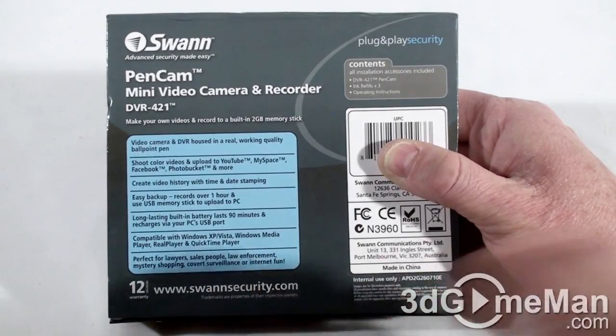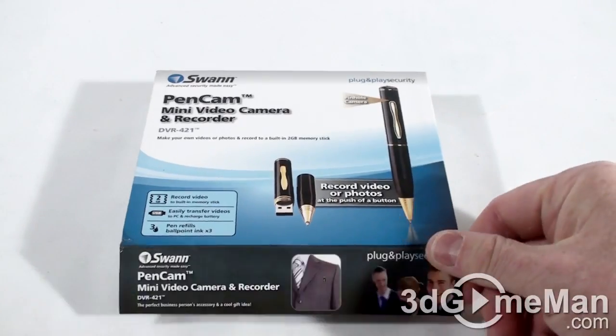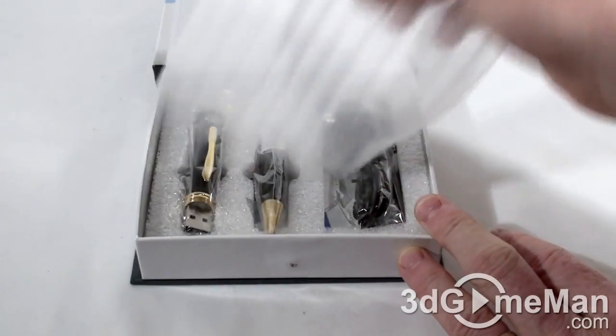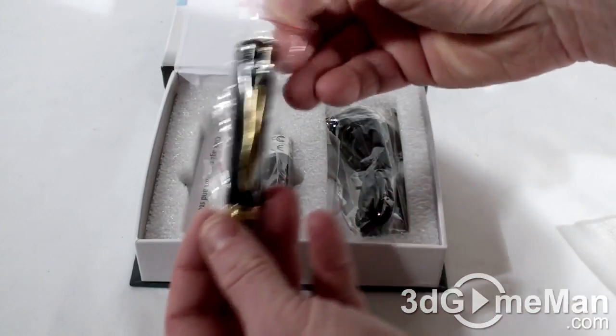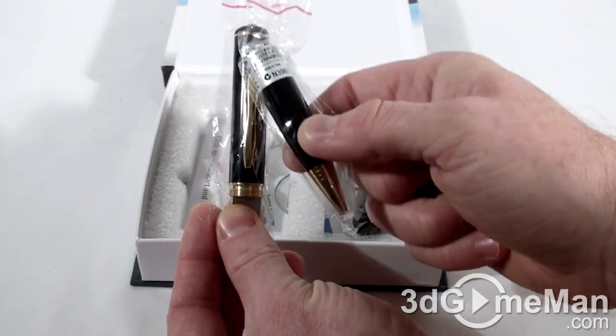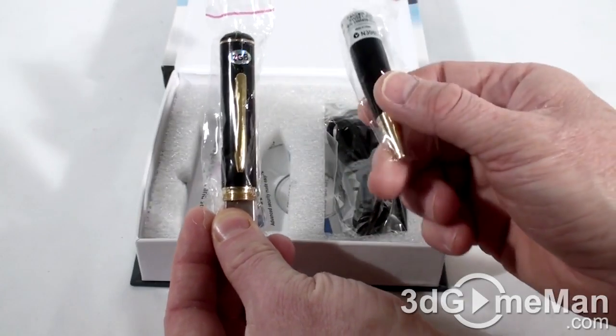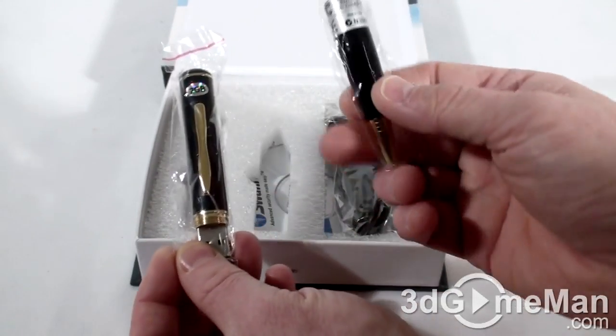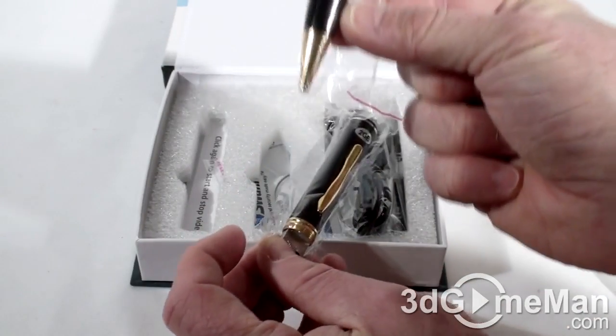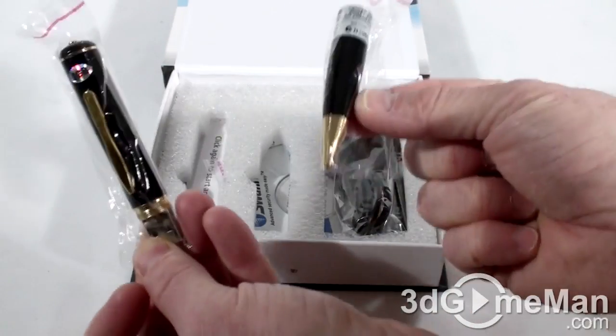Moving right along, let's look inside. Protective cover here on top. The pen comes in two different parts: top with the camera and the USB connection, and the bottom with the pen refill in it. It actually functions as a pen. Both parts are in a plastic bag.